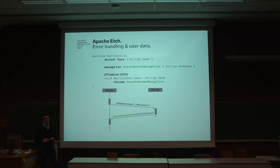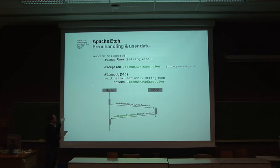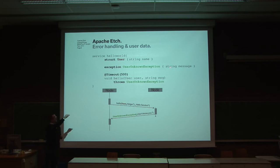Another feature of Edge is data modeling and error handling. Data modeling is inspired by object-oriented languages: you can define structs, and also use OO features like inheritance. For example, we have a struct called User with a name property, and the hello method takes a User as a parameter. You can also define exceptions just like normal data — for example, a UserUnknownException with a string message. You then annotate your function with a throws declaration, just as you know from Java.